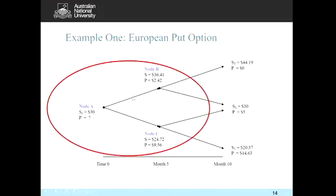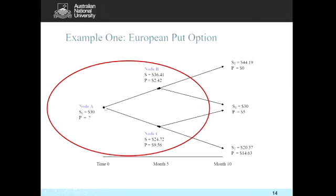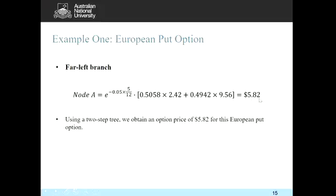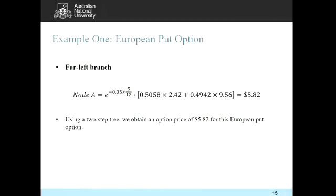The last step is to focus on the far left branch. There is a 50.55% chance of moving up (option value $2.42) and a 49.42% chance of moving down (option value $9.56). We calculate the expected payoff and discount back another five months. This gives a put option price of $5.82, which we write at node A — the present time. This completes Method 1 for the European put.